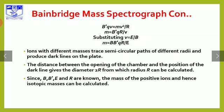Since the masses of the ions are proportional to the radius, isotopic masses can be calculated. The magnetic field B', the electric field E, and the radius R are measured, and the formula is applied to determine isotopic mass.